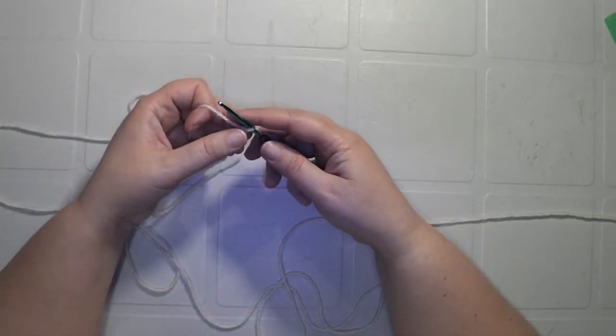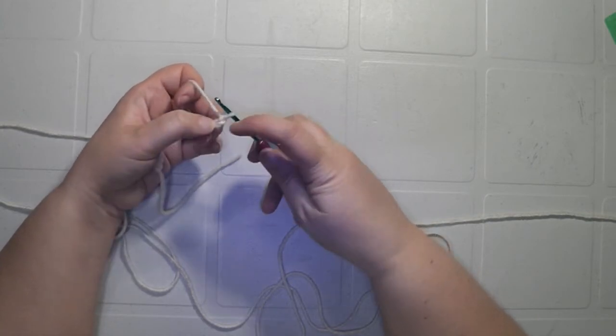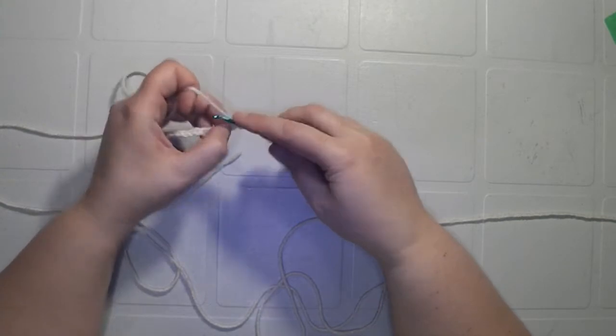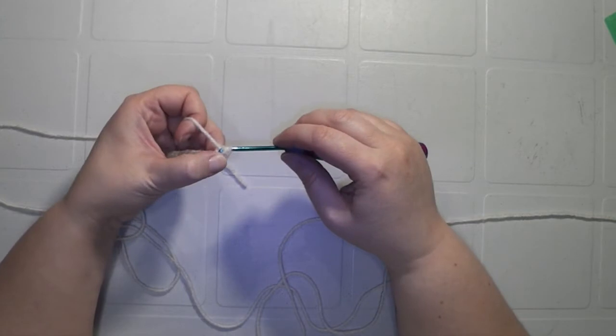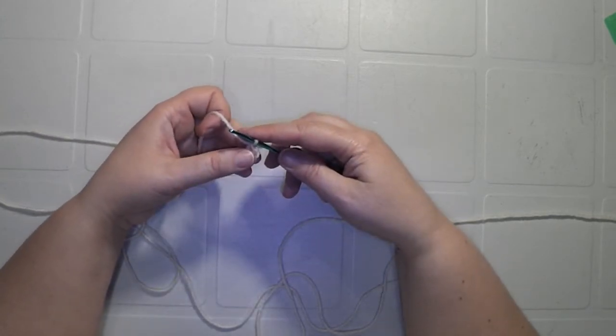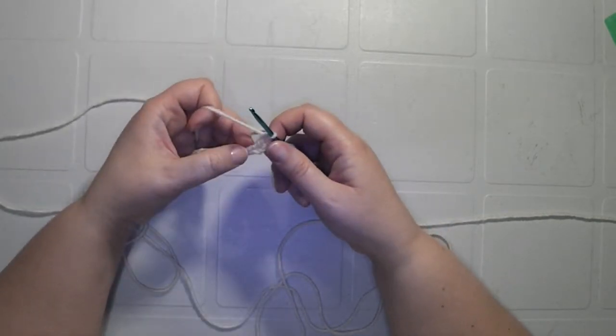Okay, so after 16 chains, we want to double crochet in the second chain from the hook. So this is the first one here. You never count the one that's on your hook already. First one, second one.